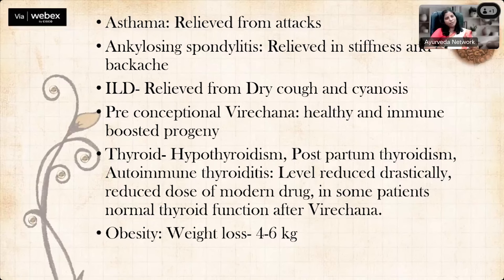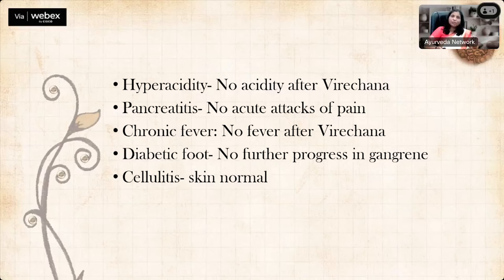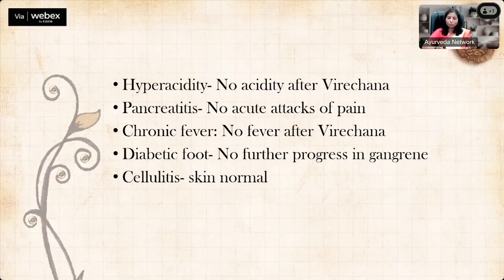In obesity, 4 to 6 kg weight loss is achieved through Virachana; with proper Rukshana prior, an additional 2 to 3 kg is lost. In hyperacidity, the medicine stops and acidity does not return after Virachana. Pancreatitis and chronic fever also show good results. Diabetic foot and cellulitis have been successfully treated with Virachana. A patient with stana vidradi who was about to undergo testing — we performed murdhu Virachana and it became normal. In Unmada, one drug-addict patient who could not sit or sleep normally developed normal sleep and reduced aggression after Virachana.